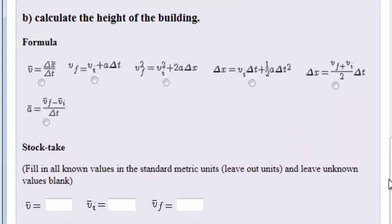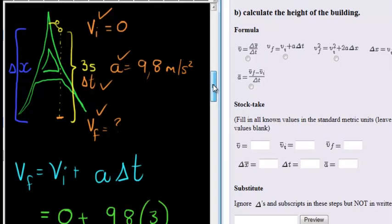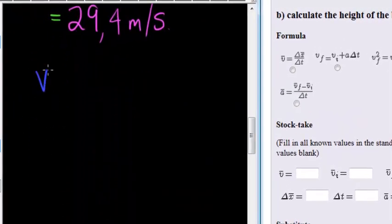In the next question we're asked to calculate the height of the building. In this case we are doing the Eiffel Tower just in our little sketch here, and we're asked to calculate what is this height, in other words Delta X, the change in displacement.